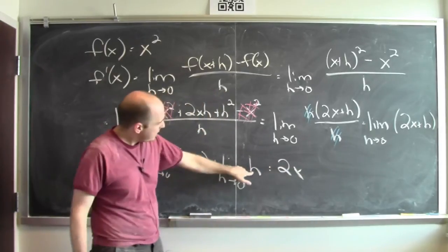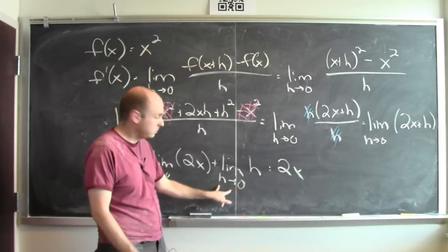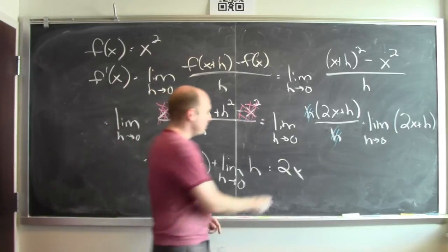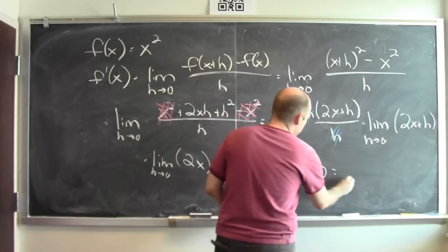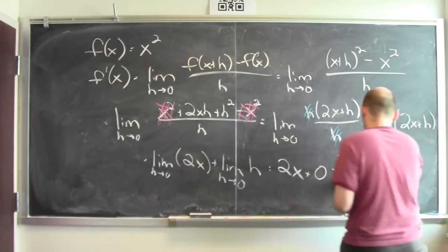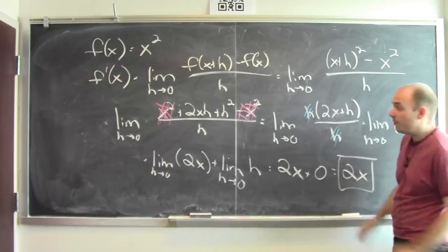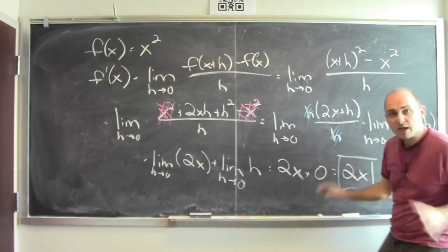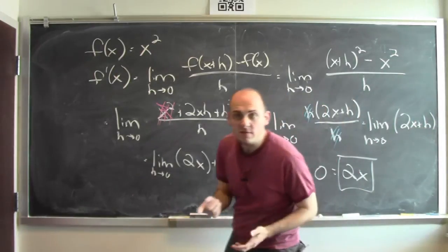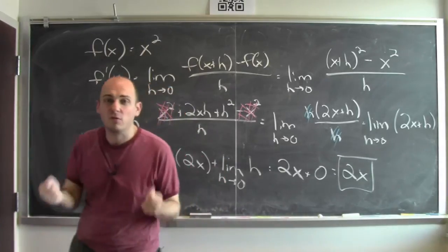And what's the limit of h as h goes to 0? Just 0. So this is 2x + 0. It's just 2x. And that is the derivative of x squared. But we calculated it just by using the definition of derivative and all the properties that we know for limits.